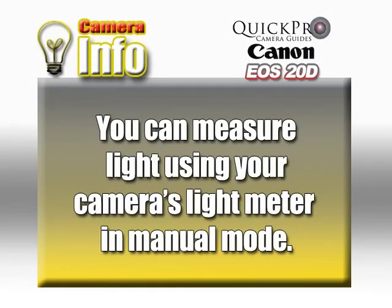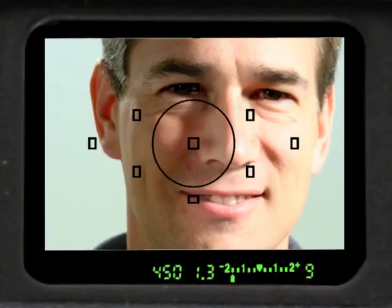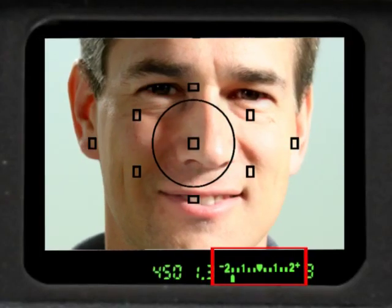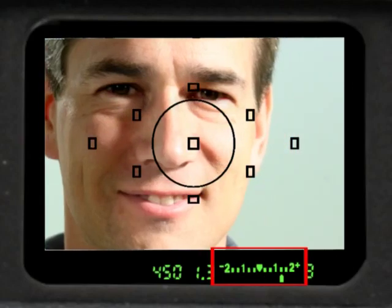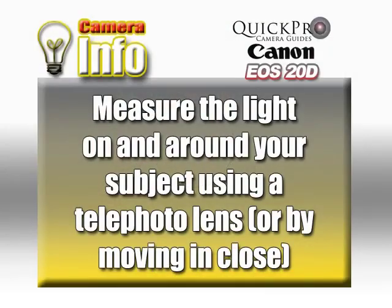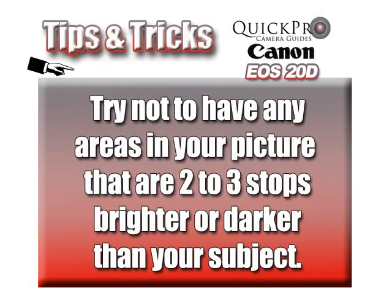You can measure light by using your camera's light meter in manual mode. This will weigh most heavily the center portion of your image. By using a long focal length lens or zoom lens in telephoto position and measuring the light on each part of your photo frame or subject, you can get a sense for how bright or dark the various areas are.